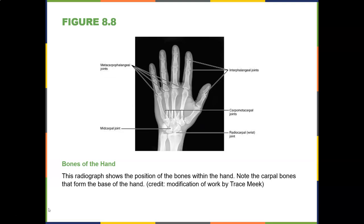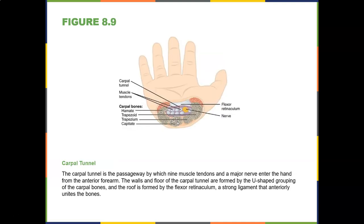Here's the right hand in anatomical position. Here's the radius and the ulna. Using 'some lovers try positions that they can't handle,' you can identify the carpal bones. Here's the carpal tunnel — you've probably heard of carpal tunnel syndrome. It occurs when the median nerve gets inflamed and has nowhere to go. They'll snip the flexor retinaculum in a procedure called a carpal tunnel release to give the nerve a little more freedom to move.